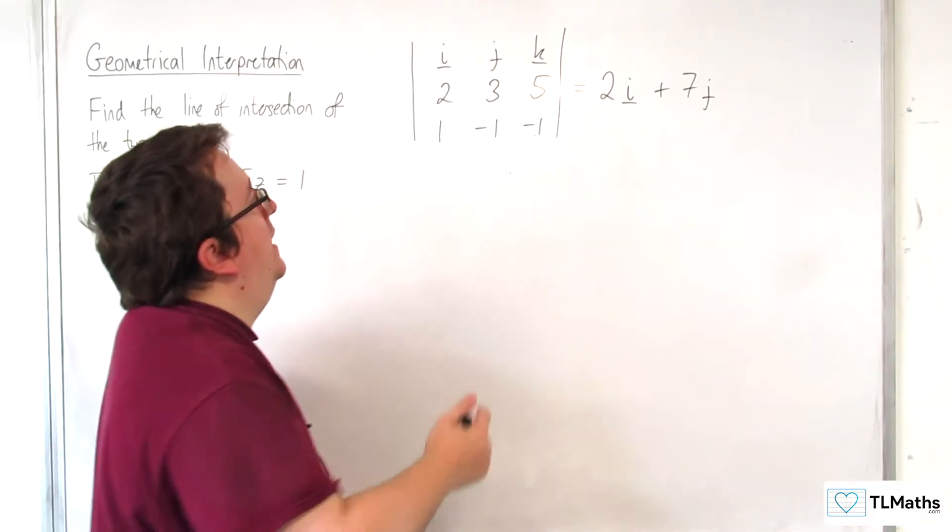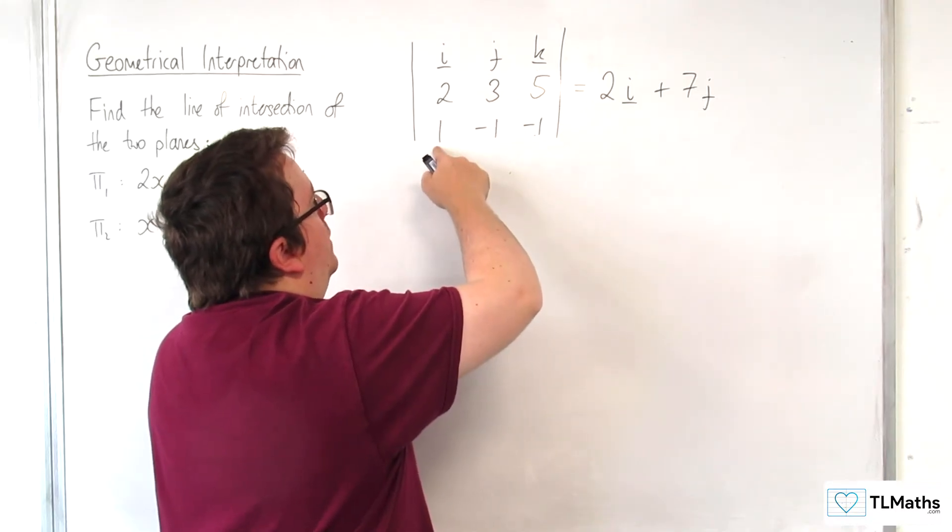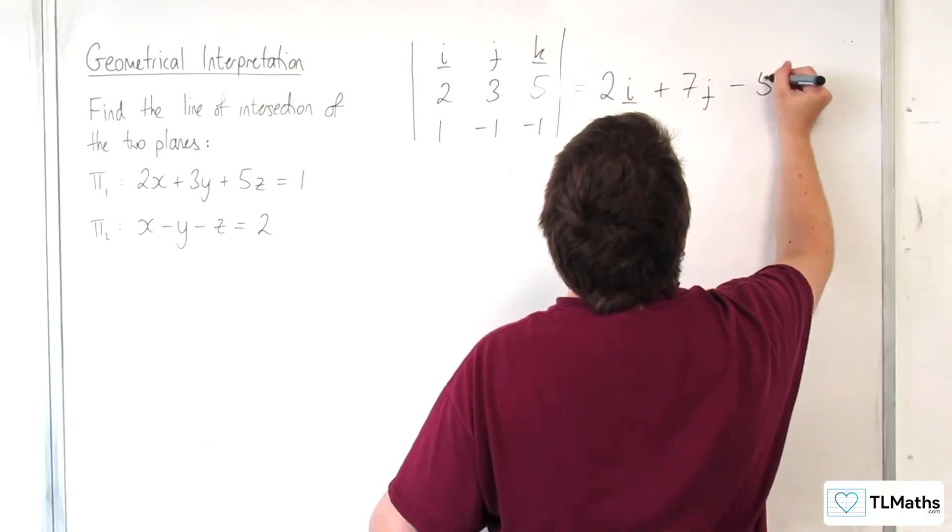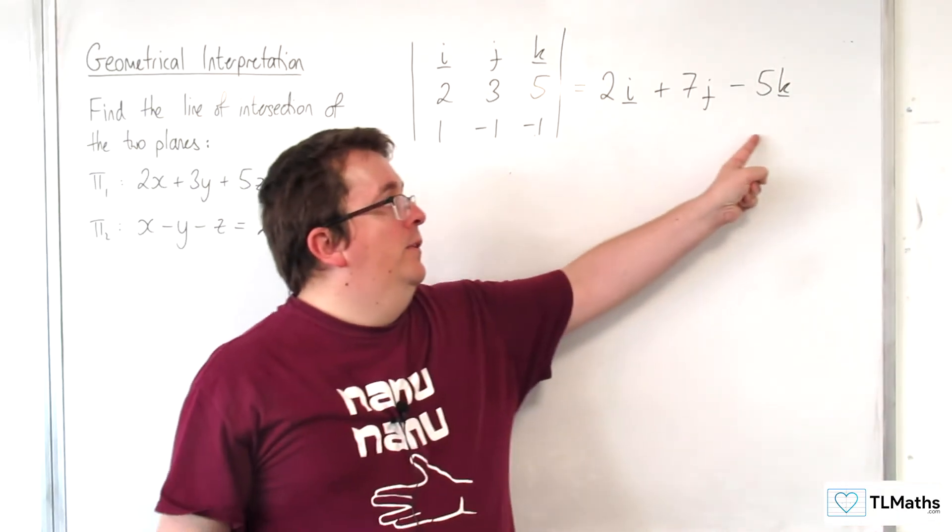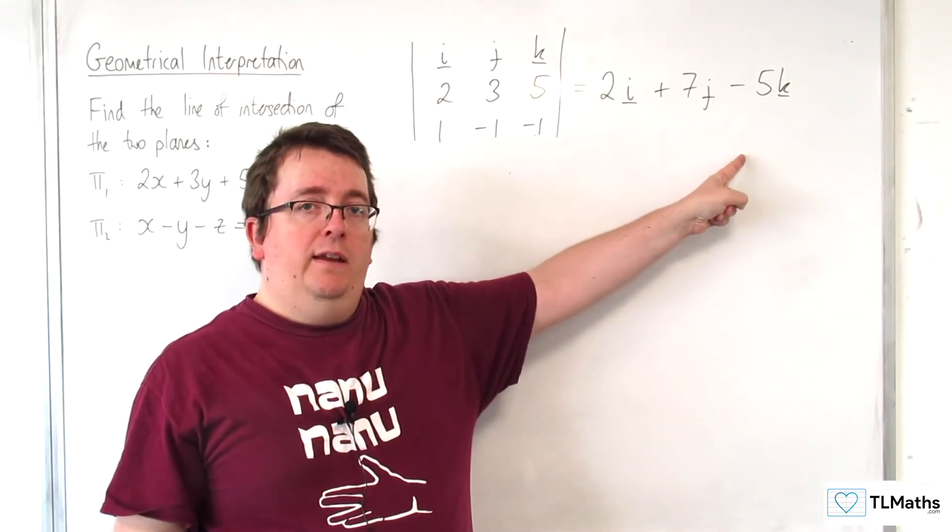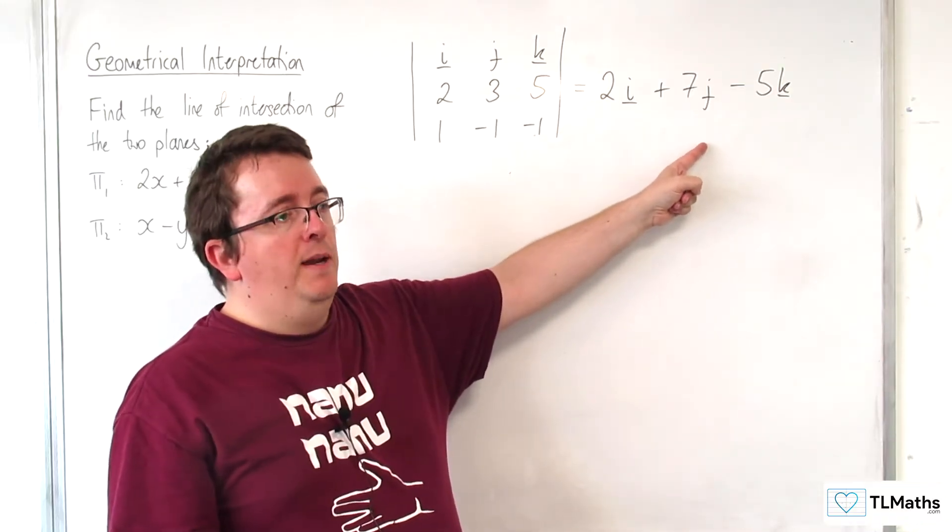And then for K, we've got 2 times -1, it's -2, take away 3 times 1, so -2 take away 3 is -5, so -5K. So what this is telling me is that is the direction of the perpendicular line, of the line that is the intersection of our two planes.